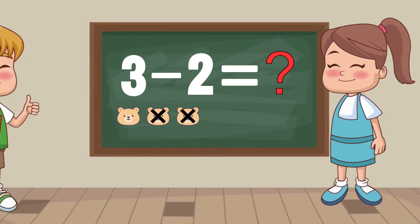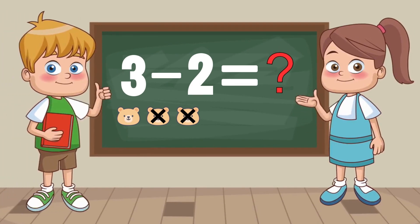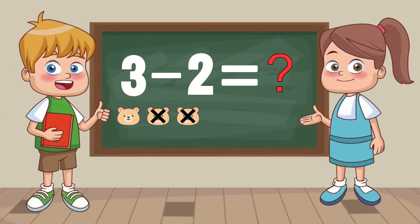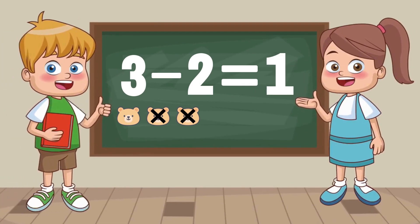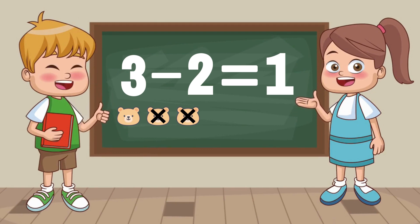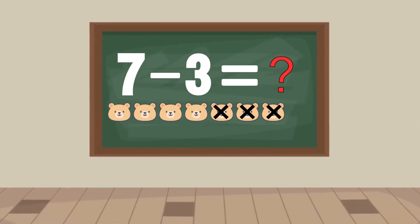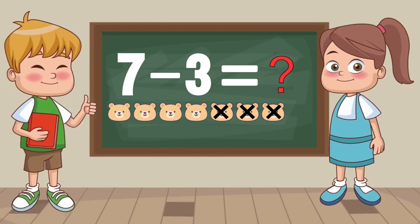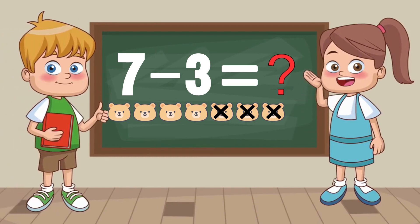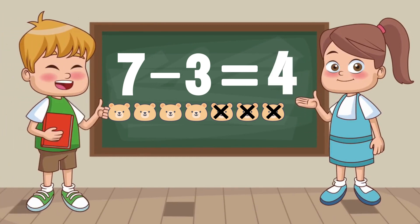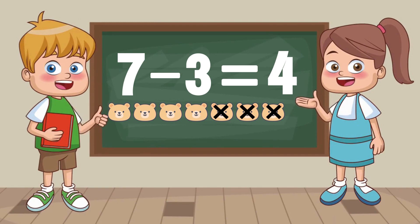3 minus 2 equals... 1. 7 minus 3 equals... 4.